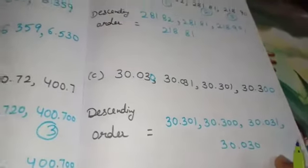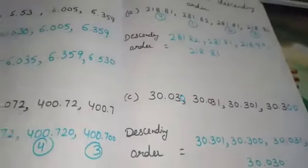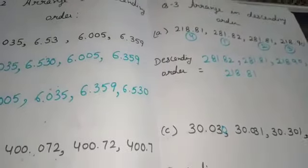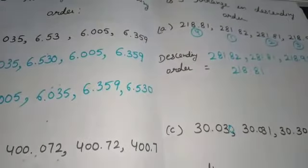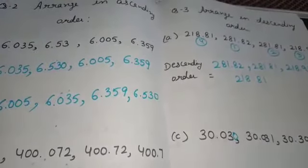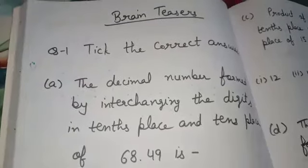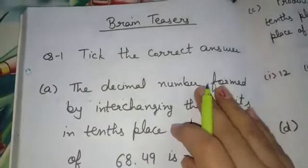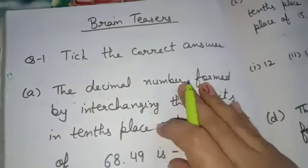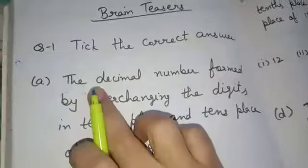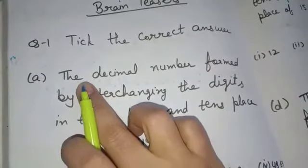The remaining two parts you will do on your own. This completes our Worksheet 6. Now let us start the brain teasers of the chapter. Question number 1 is: tick the correct answer. Part A: